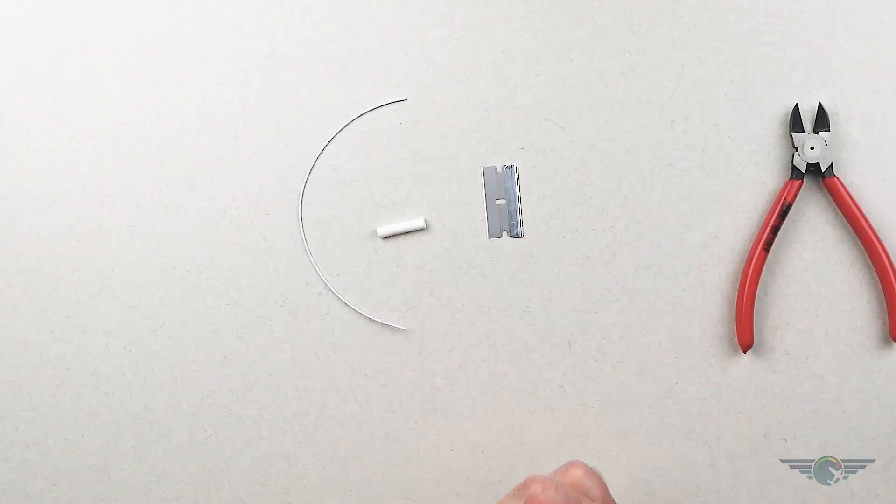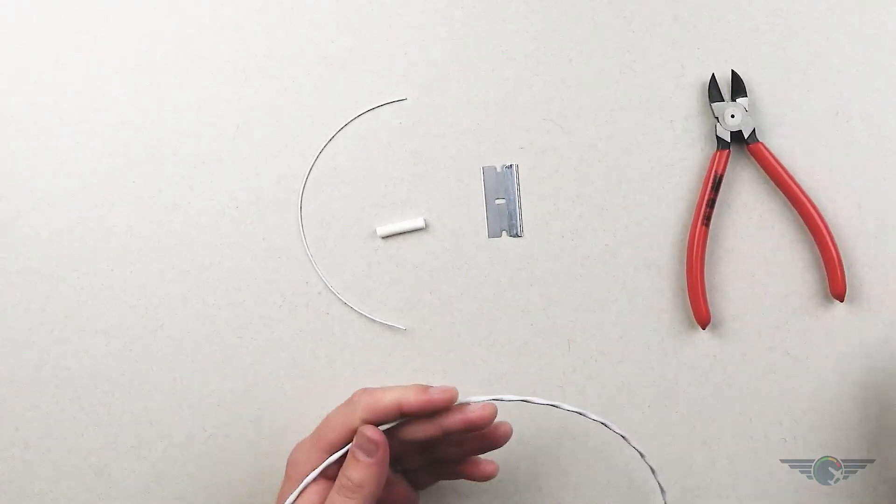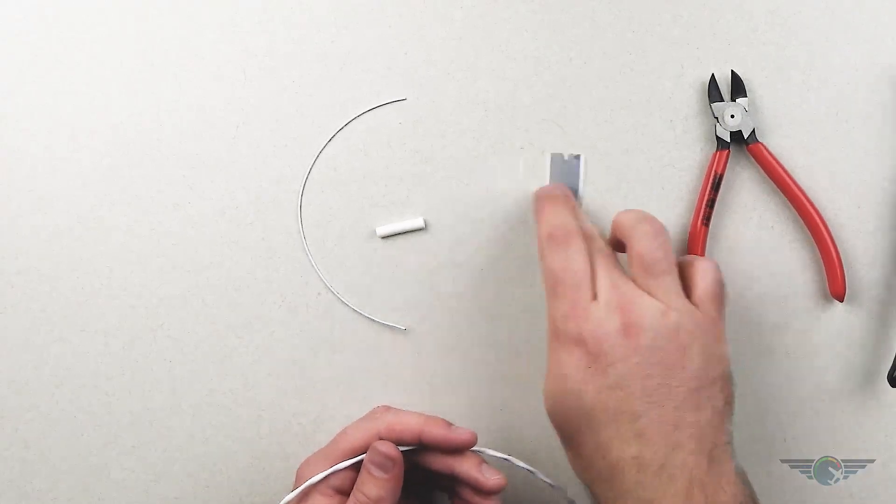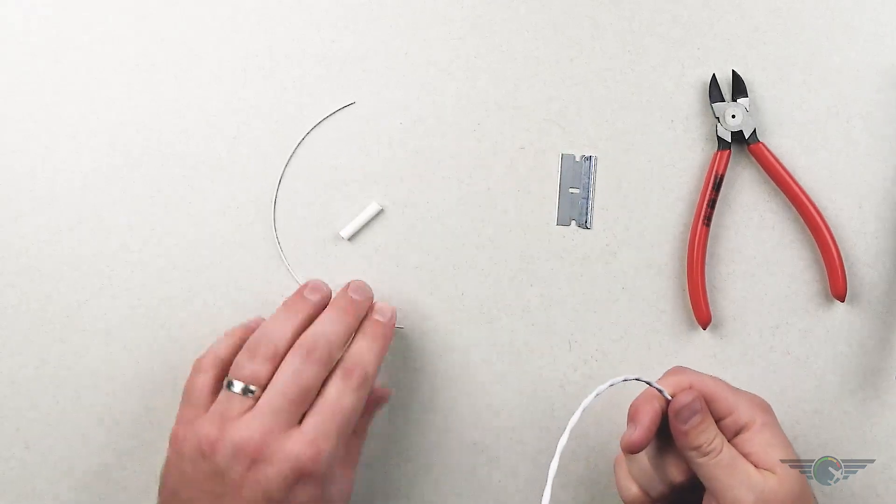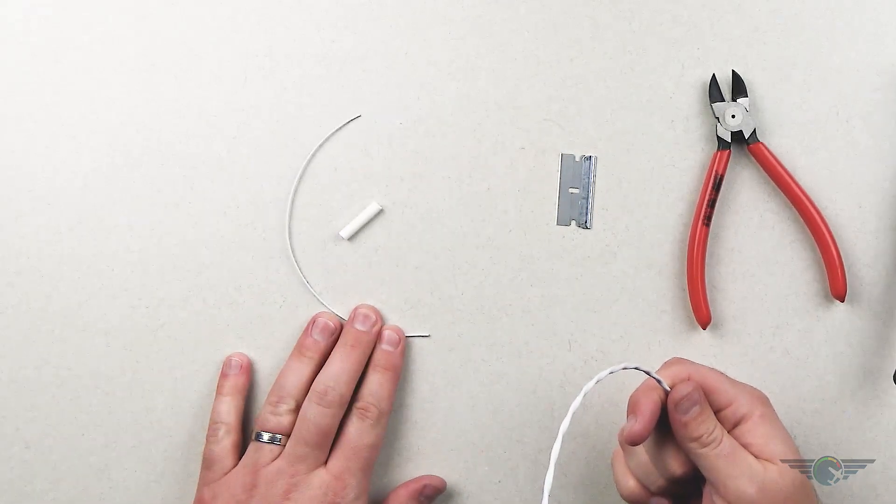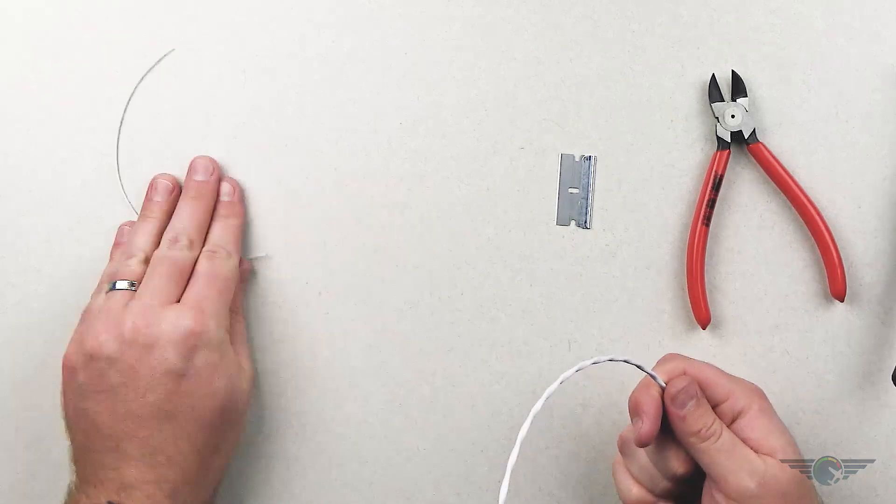And then for tools I've got a pair of flush cuts, I've got my wire strippers, a razor blade which is going to be pretty important, I've got some heat shrink here, and then another non-shielded wire. So let's go ahead and start this.